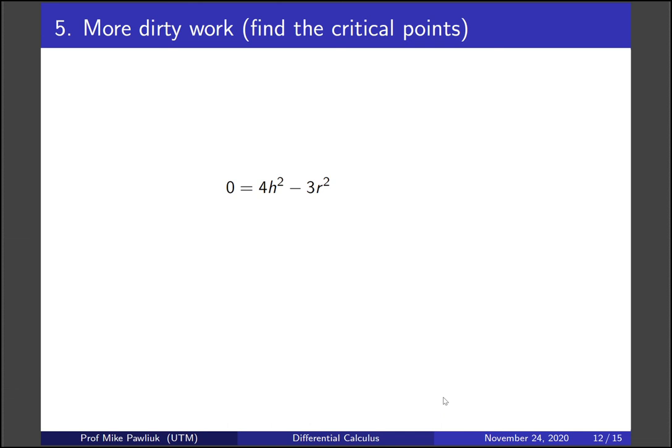So let's think about this one. Rewriting it on the next slide. Let's isolate h in terms of r. So we move the three r squared over and now we can solve for h in terms of r. So h is plus or minus the square root of three over two times r. Okay that looks pretty good.